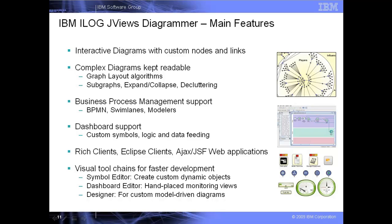For developers building business process management displays, JVUES Diagrammer comes equipped with a pre-built modeler that is ready to be customized. For developers building dashboards, JVUES Diagrammer provides pre-built sets of ready-to-use graphic objects to connect to the data. All JVUES Diagrammer displays can be deployed on the desktop as a Java application, an applet, or within an Eclipse application. They can also be deployed as a rich web client using RIA technology for a very good user experience.